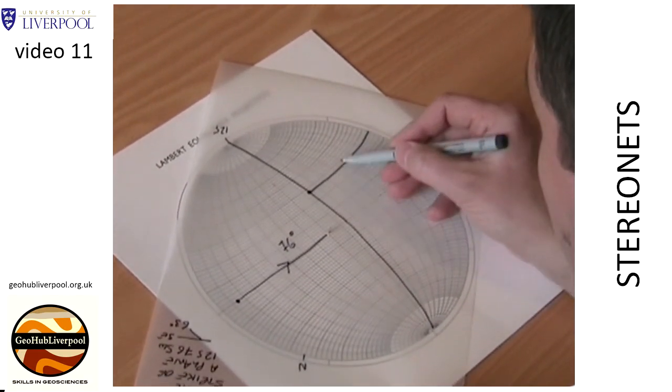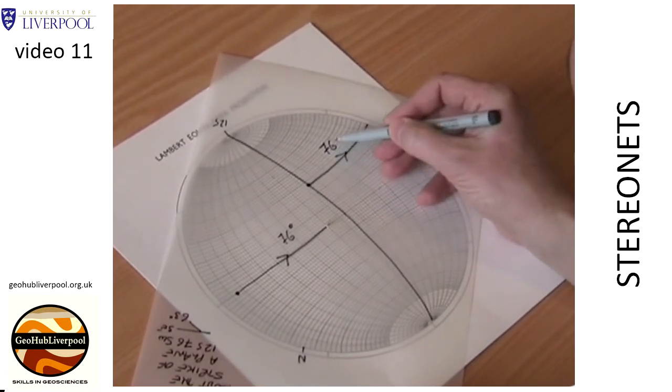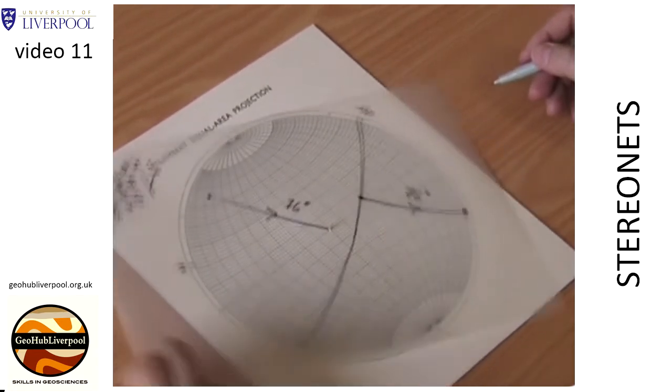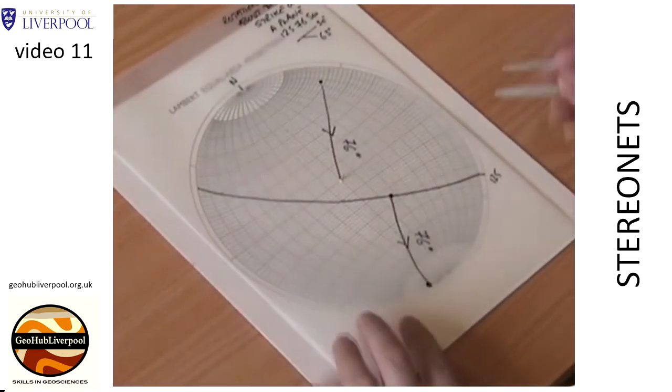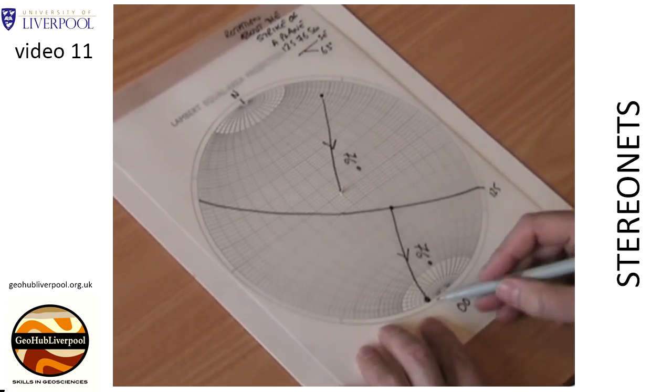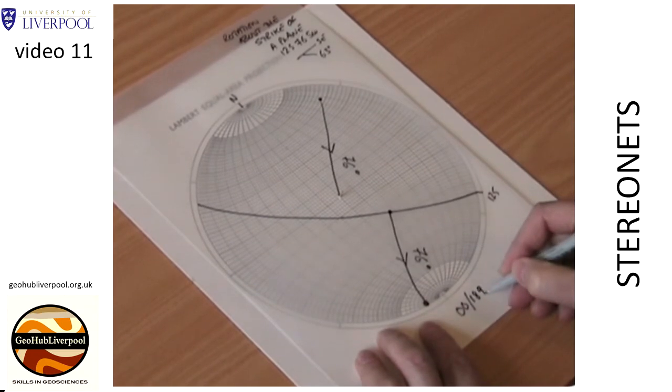Mark the original position of the sedimentary structure. Rotate the tracing paper so that the north pole is in its original position.